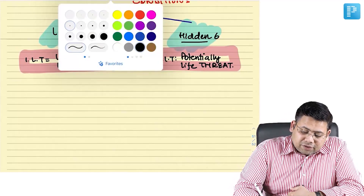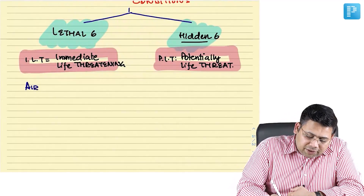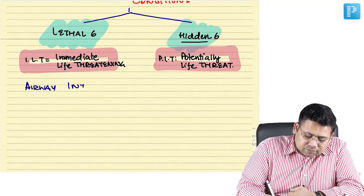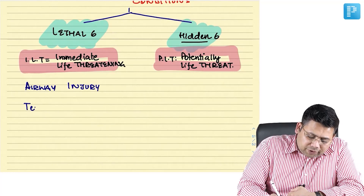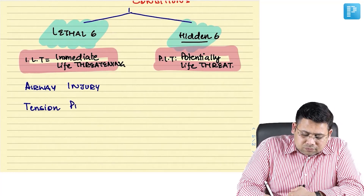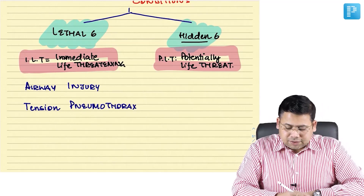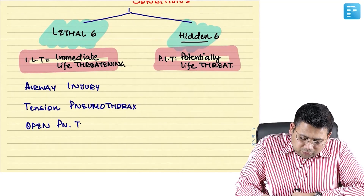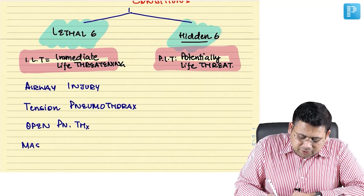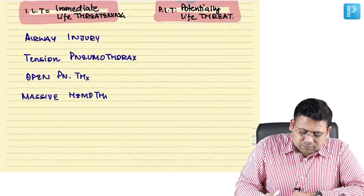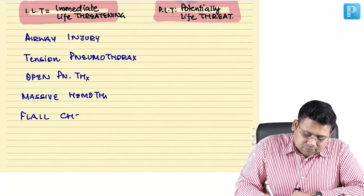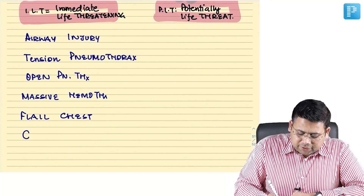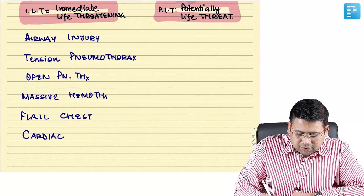The Lethal Six includes: airway injury, tension pneumothorax, open pneumothorax, massive hemothorax, flail chest, and cardiac tamponade.